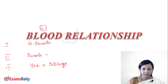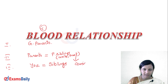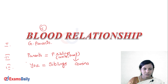So, the second generation consists of your parents and their siblings. How do you relate to your parents' siblings? They are your uncle and aunt, who belong to the second generation. Their children — son or daughter — are your cousins, and they belong to the third generation. This is the direct relation.